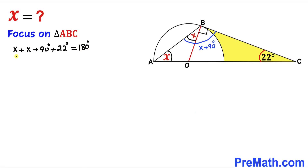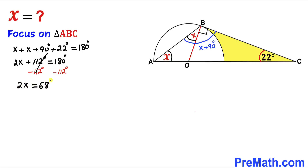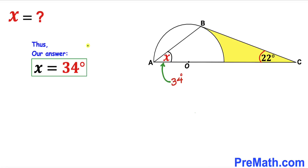Let's combine like terms: 2x plus 112 degrees equals 180 degrees. Now subtract 112 degrees from both sides, giving 2x equal to 68 degrees. Dividing both sides by 2, our angle x turns out to be equal to 34 degrees.